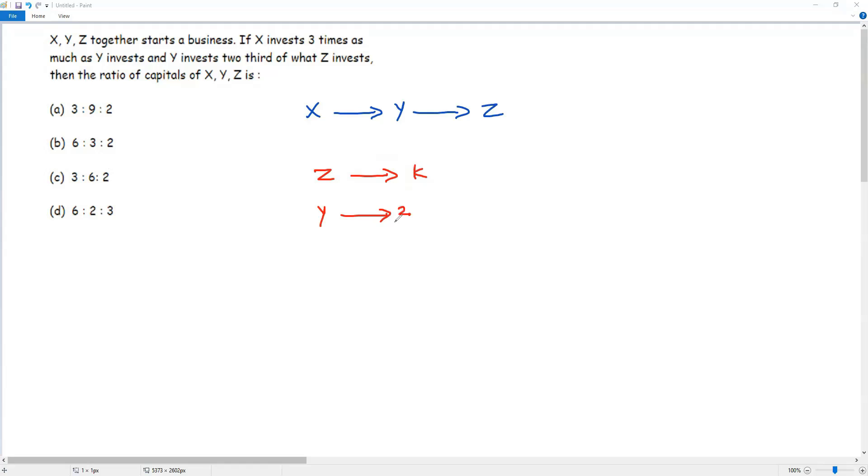So the investment of Y is two-third of K and now I'm going to write the investment of X. So X invests three times as much as Y invests. So three times the investment of Y which is two-third of K. So this three-three will cancel. I get 2K as investment for X.